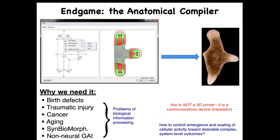The solution to these problems we call the anatomical compiler. The idea is that at some point in the future, you will be able to sit down in front of a computer and draw the animal or plant you would like to have — the three-dimensional structure, the anatomy, not the molecular biology — and this system would compile that anatomical description into a set of stimuli to give to cells to build whatever you want, like this three-headed flatworm.